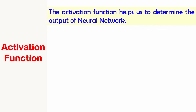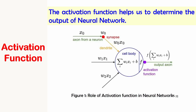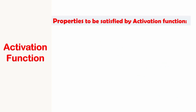The activation function helps us to determine the output of a neural network. Consider an artificial neural network shown in the figure, where we can see the role of the activation function. There are three inputs x0, x1, and x2, multiplied by the corresponding weights w0, w1, w2. The cell body performs the weighted sum of the inputs plus the bias term. The activation function is applied on this sum, and its role is to produce an output — that output is obtained here.